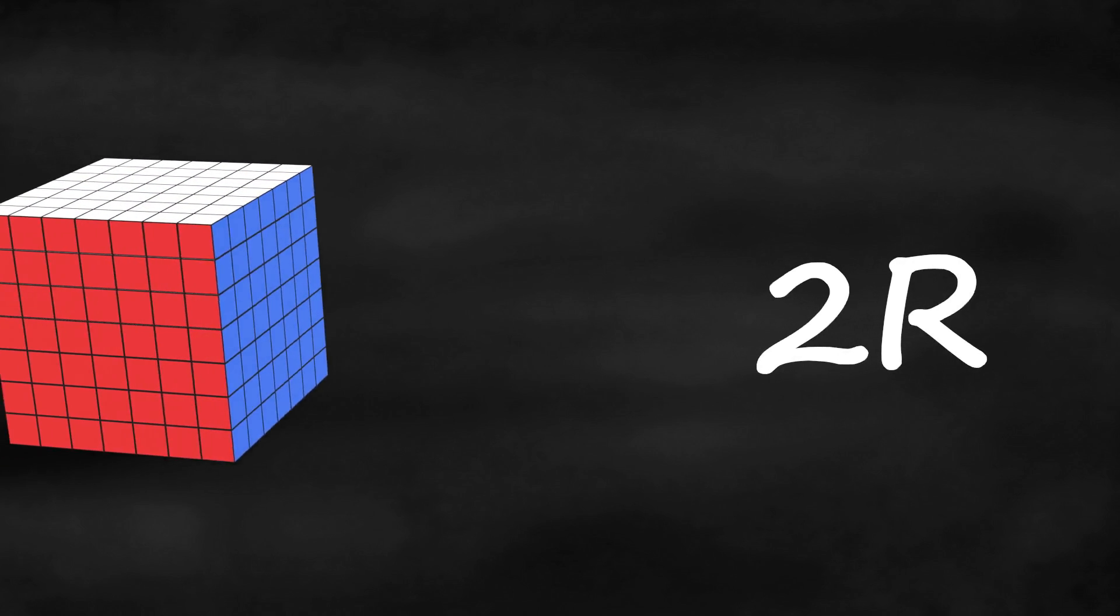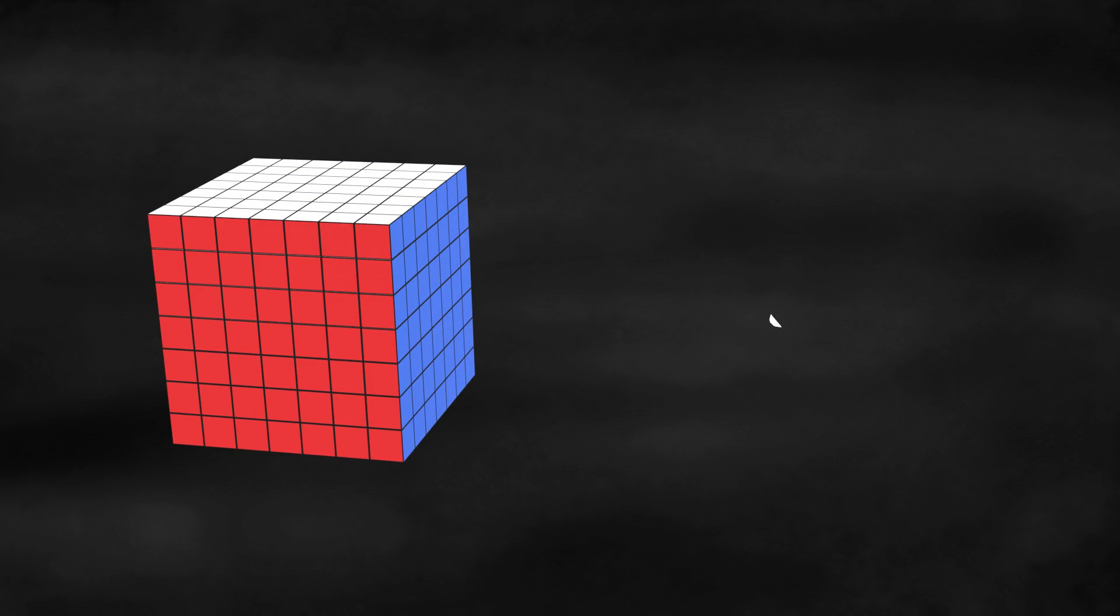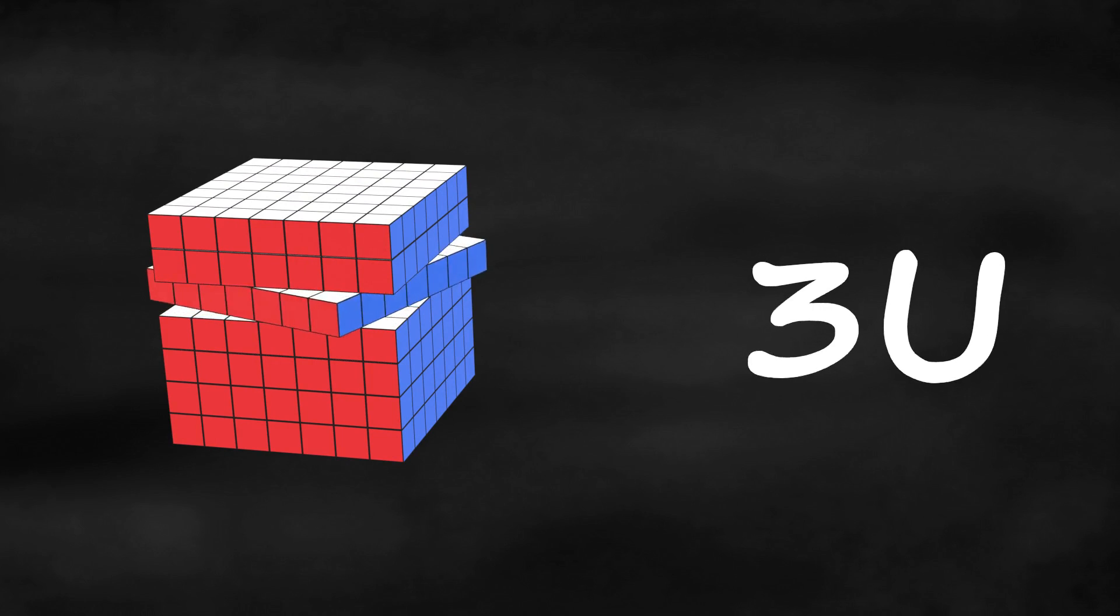You don't need to put a 2 at the beginning of a w move because the w already indicates the second layer will come along. If you remove the w, the turn becomes only the one layer and none of the others. 3u, count down 3 layers, and turn just that layer.